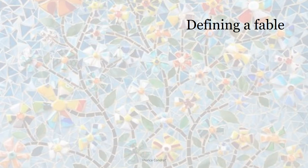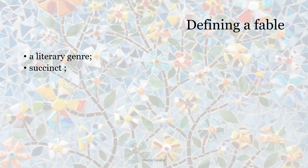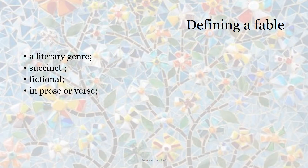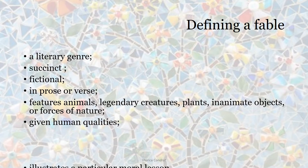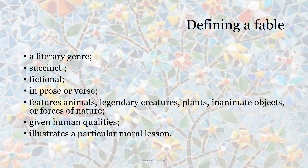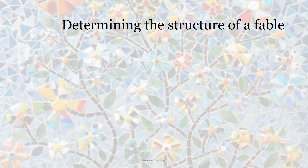Definitely, a fable is a literary genre. It is extremely short and fictional. It can be either in prose or verse, and it features animals, legendary creatures, plants, inanimate objects, or forces of nature — and they are assigned human qualities. At the end there is the moral, which illustrates a valuable lesson to be learned.